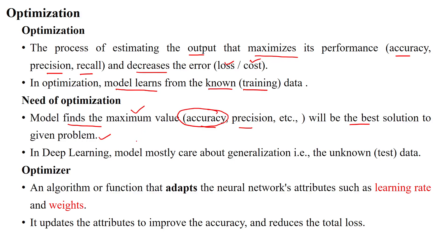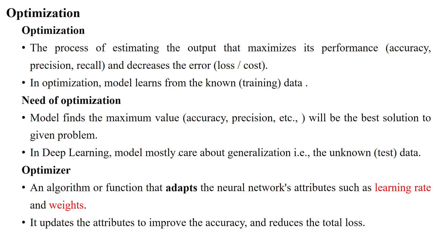In deep learning, we mostly care about generalizing the model. After developing the model in the training phase, it will be tested on data that is unknown to the model — data that is very new. That unknown data must also be classified perfectly. If the unknown data is perfectly classified, that model is called a generalized model. The optimizer is an algorithm or function that adapts neural network attributes.